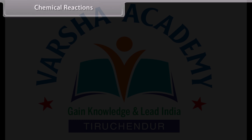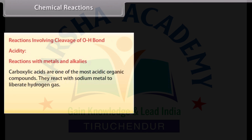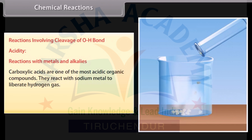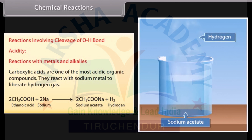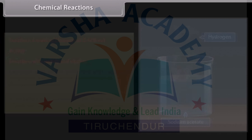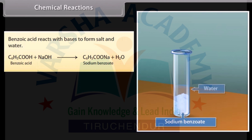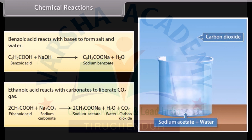Chemical reactions involving cleavage of the O–H bond — acidity: carboxylic acids are one of the most acidic organic compounds. They react with sodium metal to liberate hydrogen gas. Sodium metal reacts with ethanoic acid to give sodium acetate and liberate hydrogen gas. Benzoic acid reacts with bases to form salt and water. Ethanoic acid reacts with carbonates to liberate carbon dioxide gas.